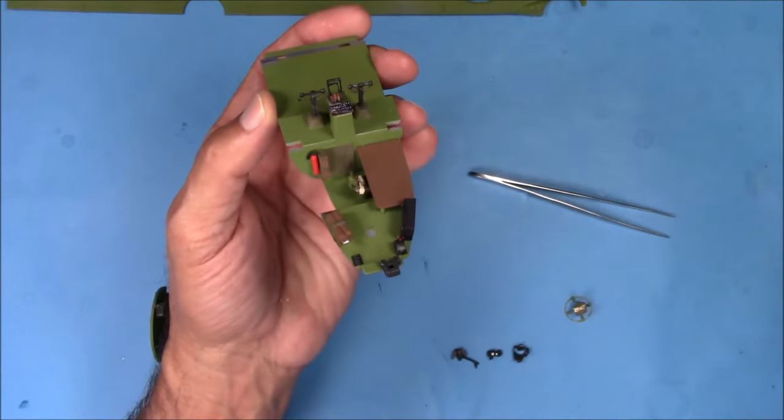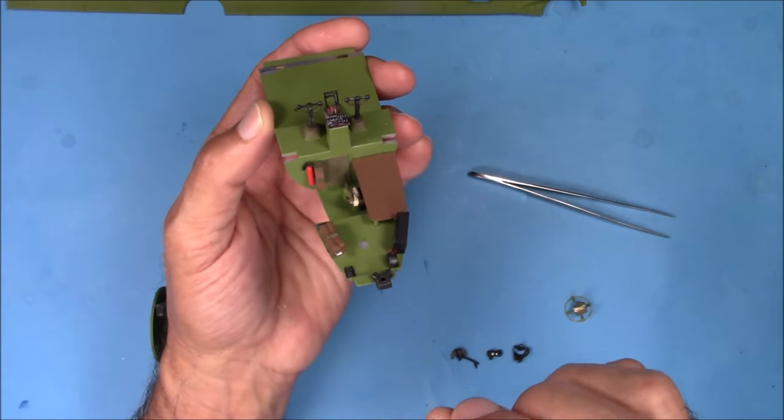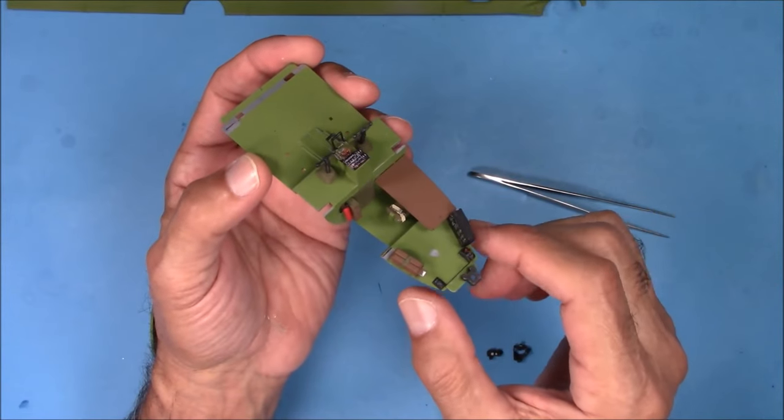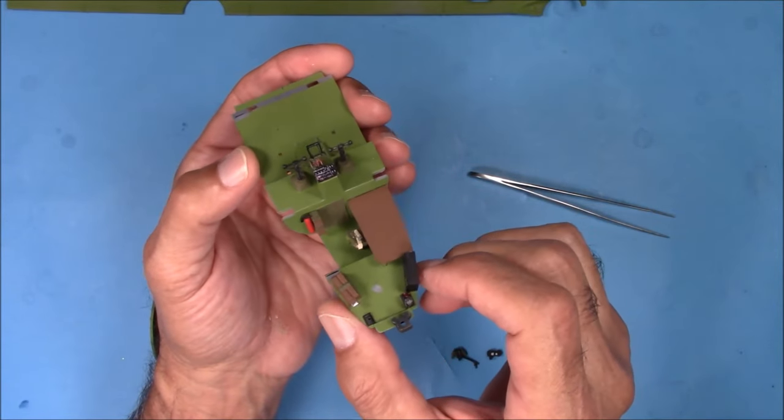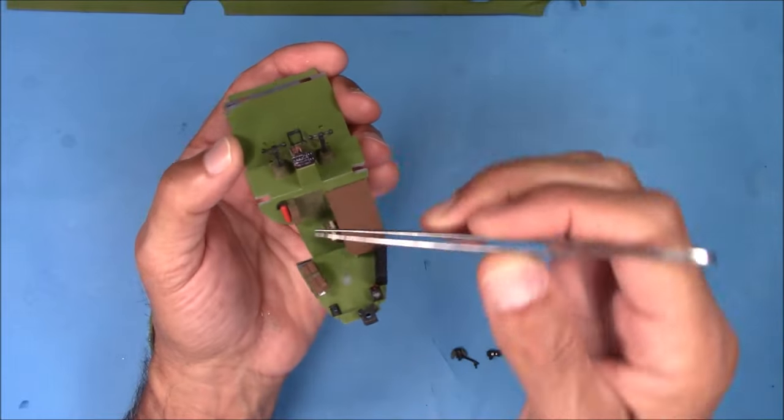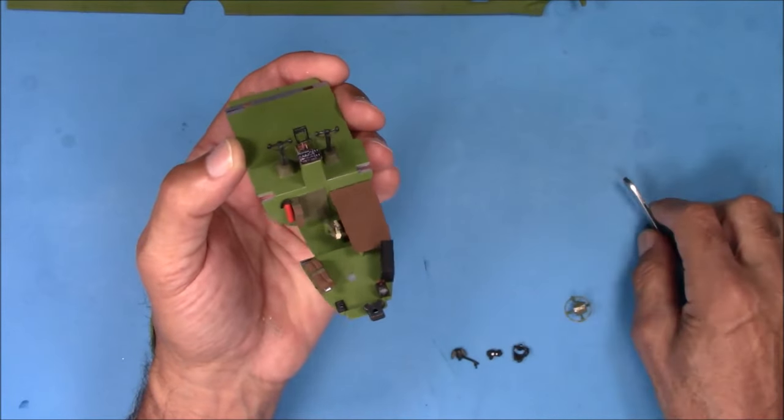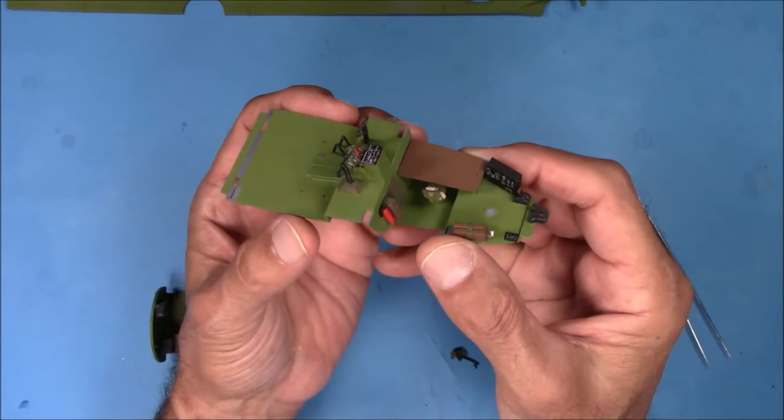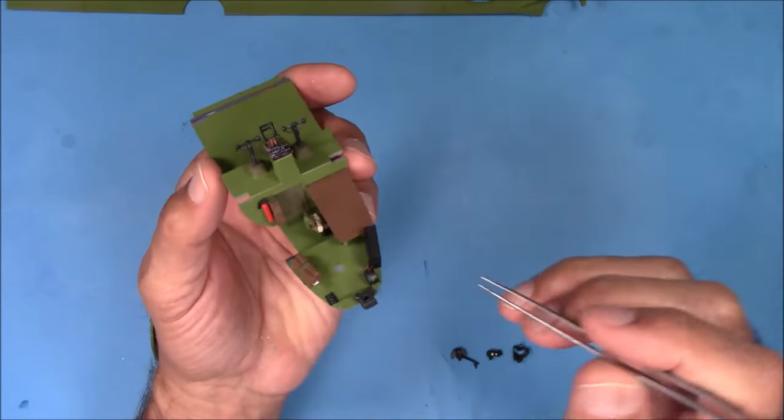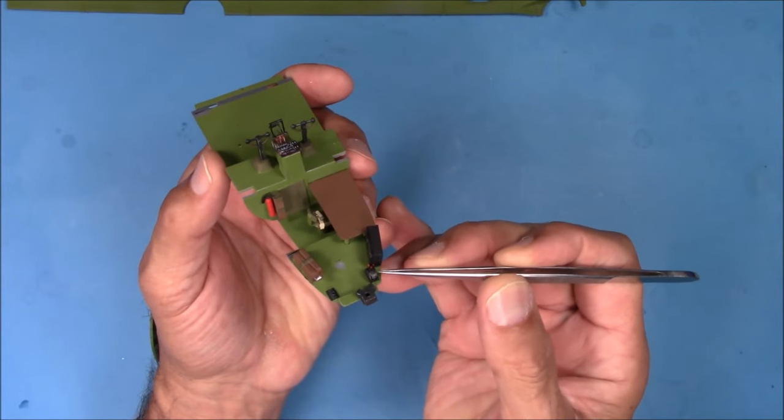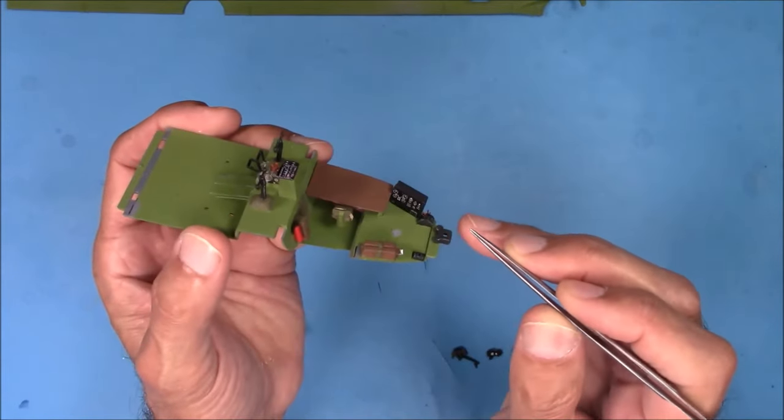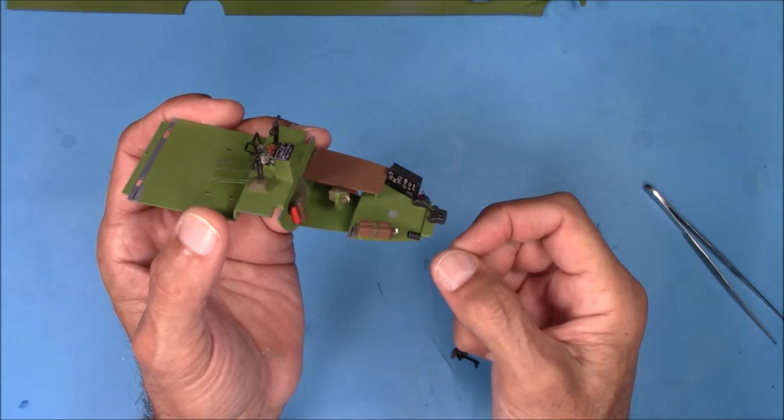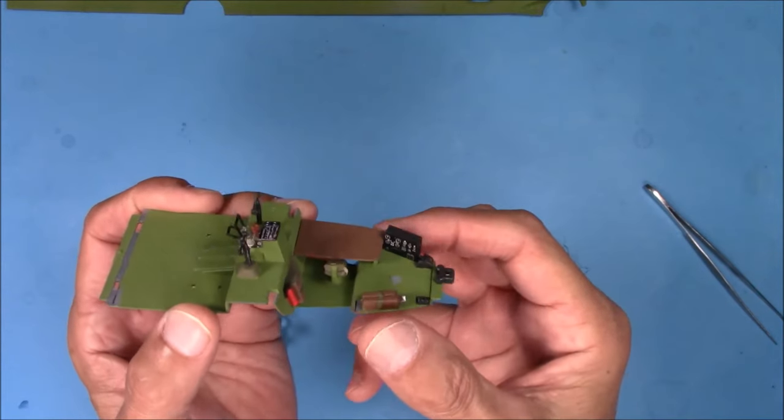And here is the cockpit area, navigator and bombardier. Once I get everything glued in place I'll show this to you again. But so far so good. And you're going to see through here really really well and through the canopy up here. So that's why I took so much time to detail these.